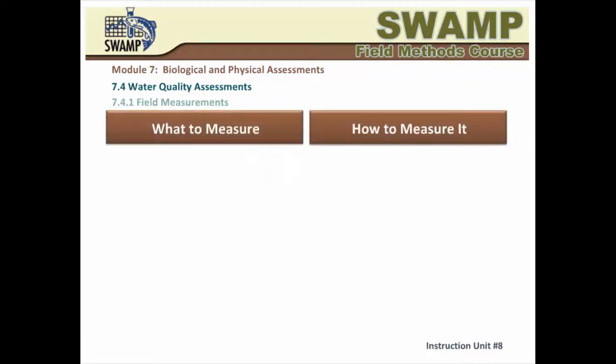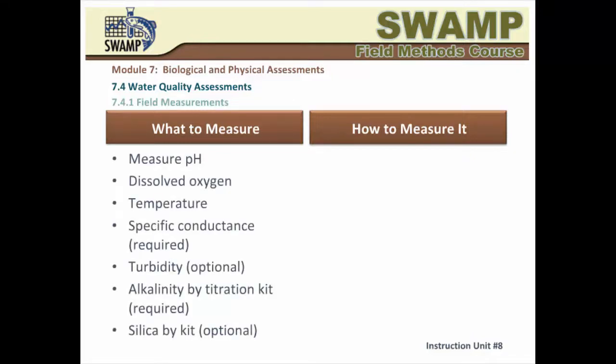This topic introduces the water quality assessment activities that are often associated with biological assessments. The SWAMP protocol calls for water quality measurements and analysis in support of biological assessments. Field measurements and water sample collection should be done just below transect A, before you do any walking within the wetted channel. In most cases, it is prudent to do these water quality assessments before you delineate the reach. The required characteristics for field measurements include pH, dissolved oxygen, temperature, and specific conductance. Turbidity is optional.